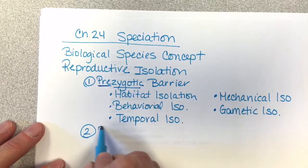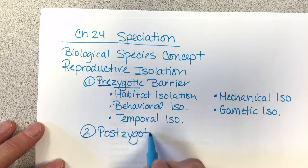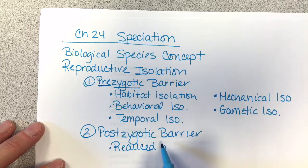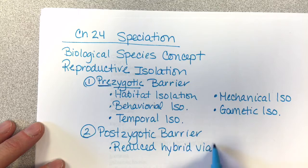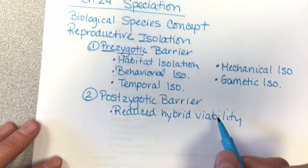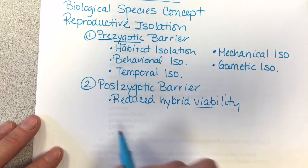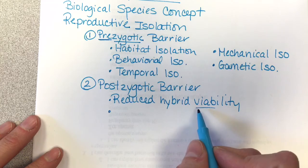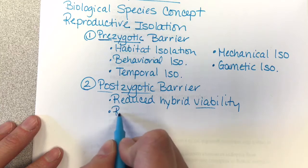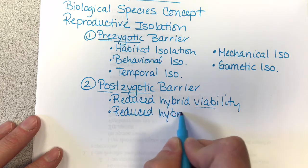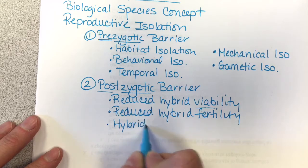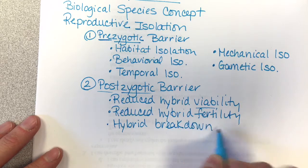Then we have the category of postzygotic barriers. This includes reduced hybrid viability — when two species mate, the hybrid may have health issues and die early. It's post the zygote, meaning the zygote is able to be formed. Also look at reduced hybrid fertility and lastly, hybrid breakdown. Review those — they are all postzygotic barriers.